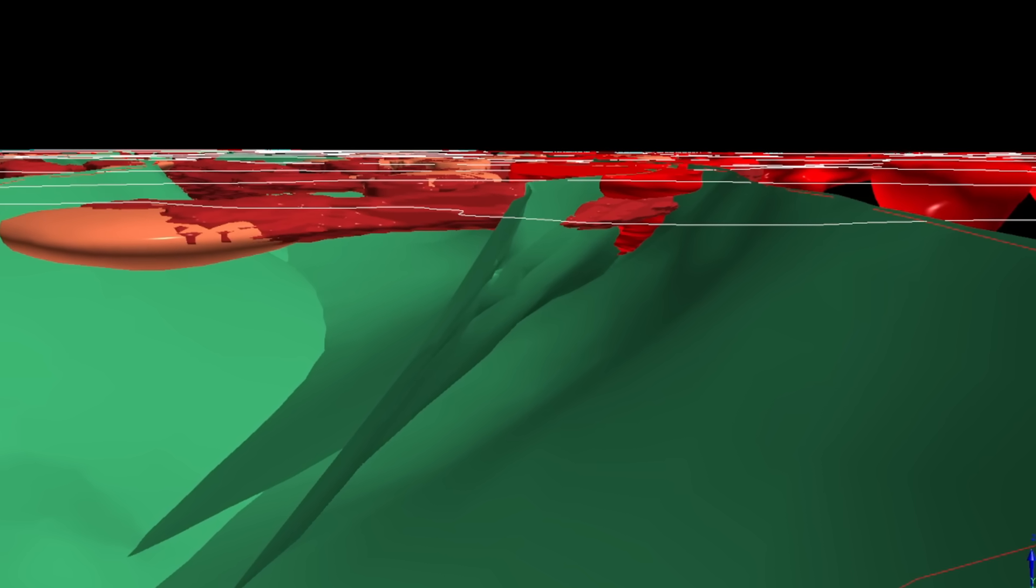So during the Tabberabera orogeny, when subduction was occurring to the east of this region, the Moyston fault still played a crucial role in magma and fluid generation, even though it was long dormant.